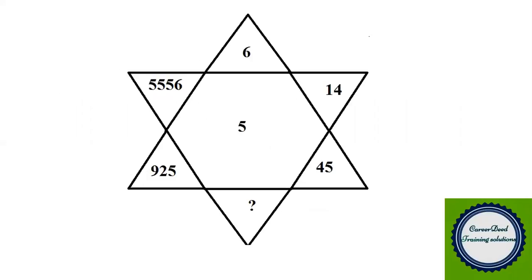Entering into the first question: you have a star shape structure and in each leaf of the star you have some numbers. You have to find the question mark value. Solving number puzzles is really simple — you should have a basic idea of the relationship between numbers. If you look at the star, you can name the leaves as leaf one, leaf two, and so on. From one to two the number is increasing, meaning in clockwise direction the numbers are increasing and in anti-clockwise direction they are decreasing.